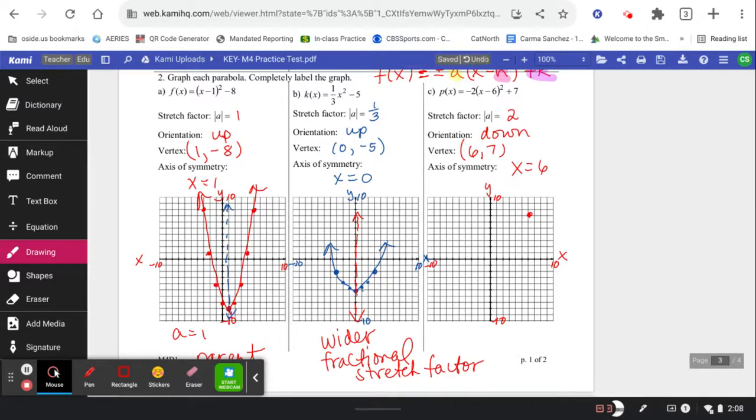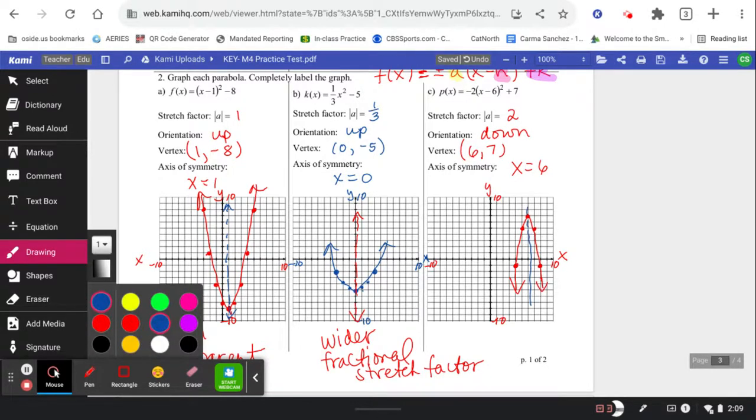From there, we go out 1, down 2, 2 times as fast as the normal parent. Out 2 would normally be 4. So out 2, down 1, 2, 3, 4, 5, 6, 7, 8, 2 times the normal parent. And out 3 would normally be 9. So this would go 18, which we can't even fit on the graph. 2 times the normal 9. And that's it. Draw in your line of symmetry. How'd you do?